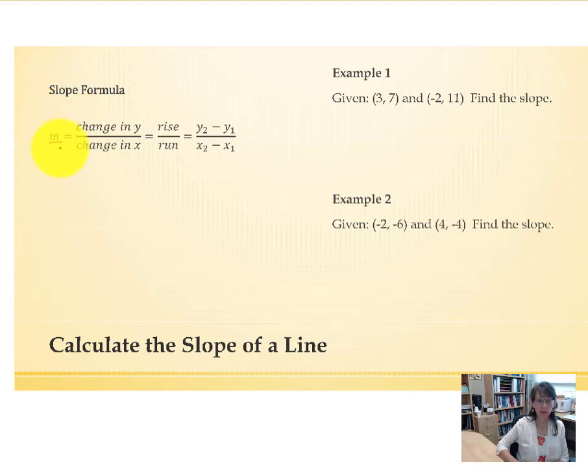The slope is represented by the variable m, and that is found by taking the change in y and dividing that by the change in x. By that, we mean taking the difference in the y values and dividing by the difference in the x values.